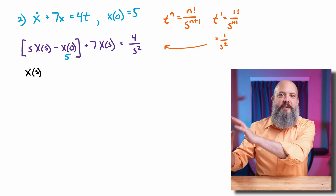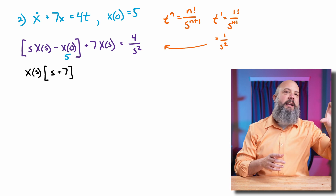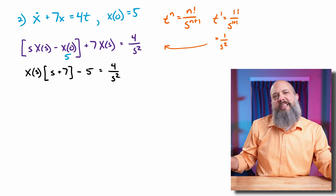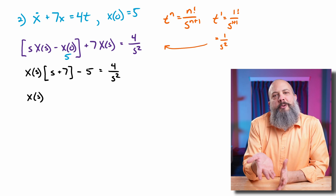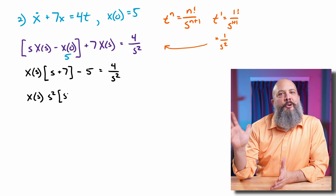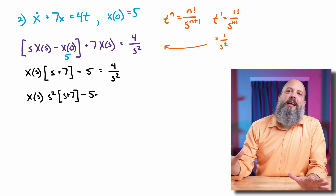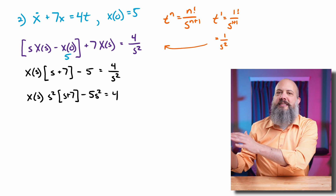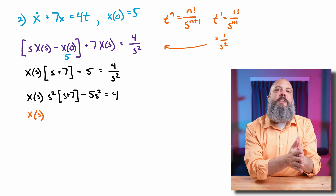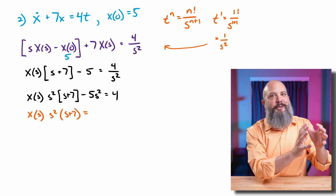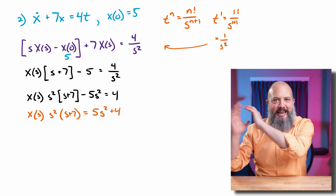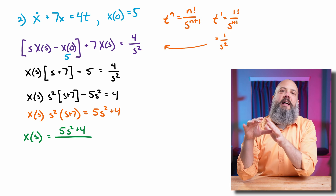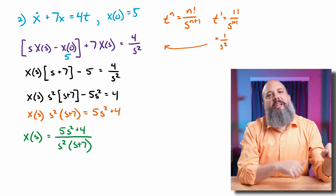I'm going to group together the x(s) terms on the left hand side: s plus 7. The minus 5 initial condition is still there. And then 4 over s squared on the right hand side. I want to get rid of that s squared term to minimize fractions, so multiplying through by s squared gives: s squared times (s plus 7) minus 5s squared equals 4. Taking the initial condition term and subtracting it over to the other side, I get x(s) equals 5s squared plus 4 over s squared times (s plus 7).